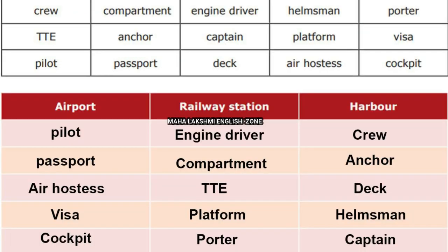Words related to airport: pilot is the person who flies the plane; passport and visa are our documents; air hostess is the person who helps us during the flight; cockpit is where the pilot and co-pilot sit. In a railway station: engine driver or loco-pilot, compartment refers to the sections of a train, TTE is Travelling Ticket Examiner, platform is where we walk, and porter is one who carries luggage.